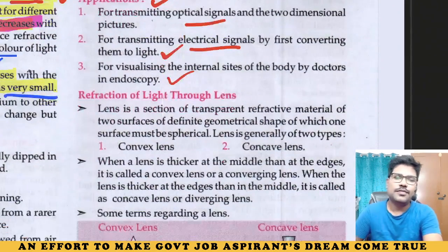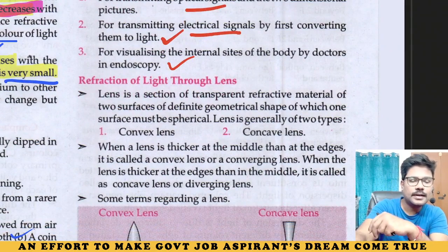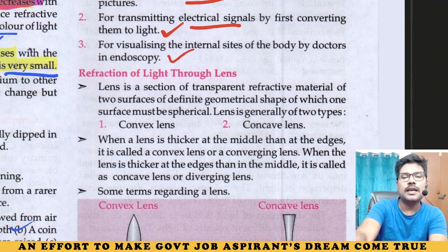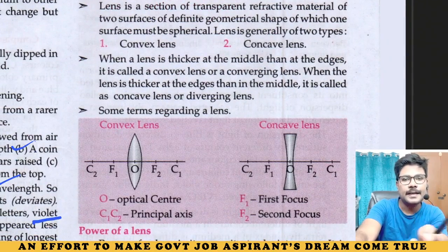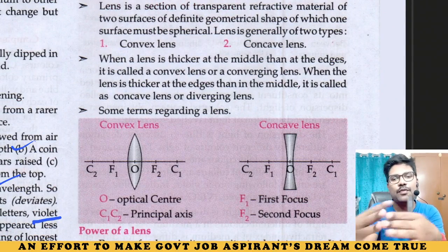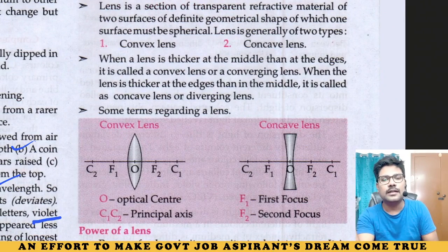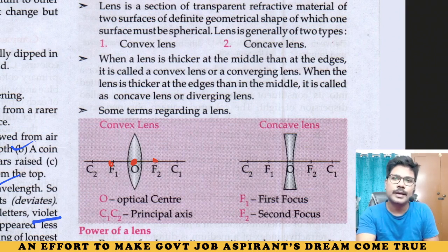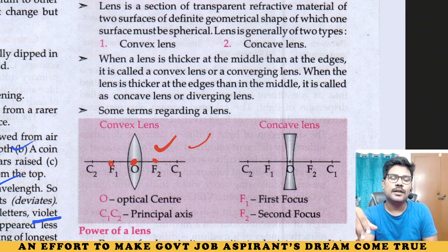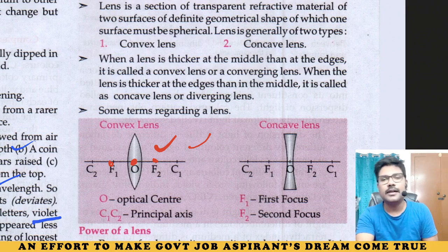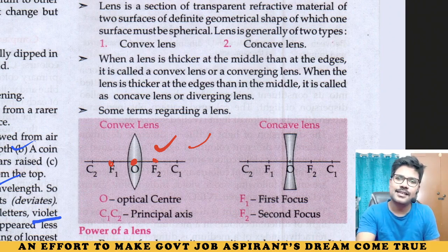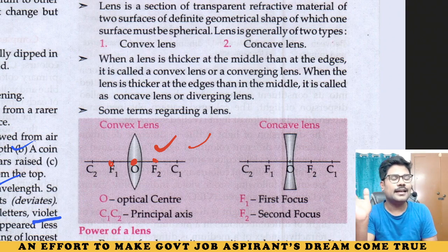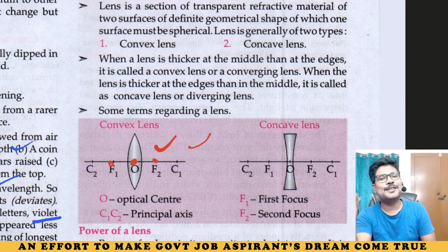Next is refraction of light through a lens — concave lens and convex lens. Key concepts include focal length, optical centre, converging and diverging behavior, and whether the image is erected or inverted. This concept will be discussed in the next video session.